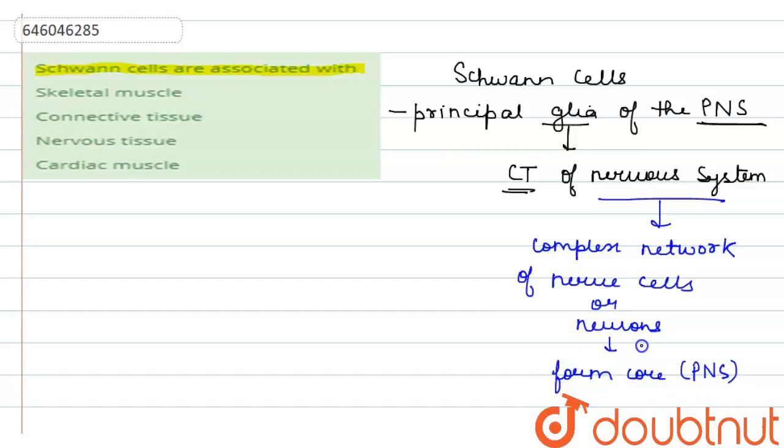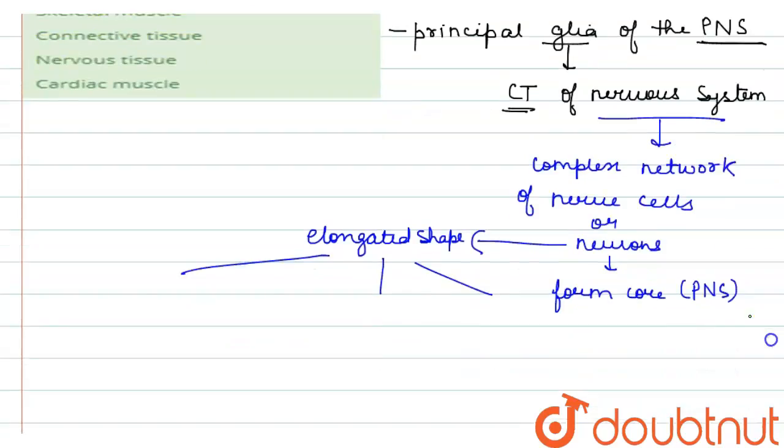These neurons have an elongated shape with three parts. One part is known as the nerve cell body.